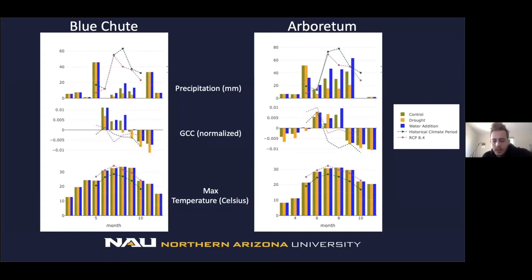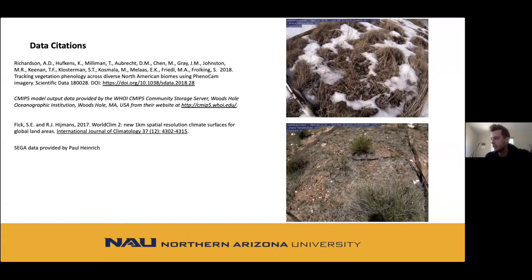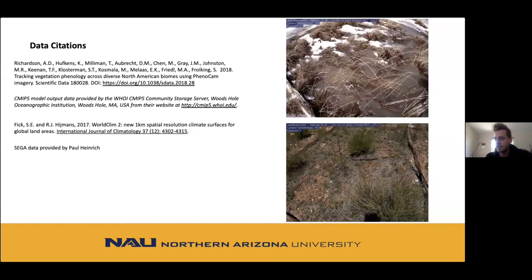The figures compare climate variables from future and modern conditions with what we had in 2019 and 2020, overlaid with fitted values from WorldClim and CMIP-5 projections. It seems likely that there's still some work to do with this model, but if we can tune it correctly, we can predict changes in GCC that could be really impactful in the future. We had a very strange dataset: monsoonal precipitation was very low and temperatures were quite high, but the changes we do see could say a lot about future fire risk. I'm excited to continue working with this model because I think it has a great likelihood of being predictive in the future.